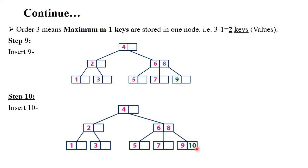In summary: if the tree is empty, create one node. If the tree is not empty, insert the node according to sequence. When overflow occurs — meaning more than two values are stored in the same node because order is 3 — you need to split. Splitting means the middle node becomes the root node.